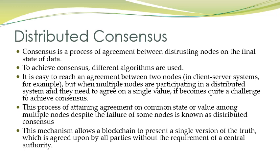The main topic of today's session is distributed consensus. Whenever we want to finalize a transaction in a blockchain network, all the nodes must agree on the transaction. Consensus is a process of agreement between distrusting nodes on the final state of the data. Nodes that do not trust each other come to a common agreement, and if they agree, the transaction is validated, a block is created, and the block is added to the blockchain. Different algorithms are used to achieve this consensus.